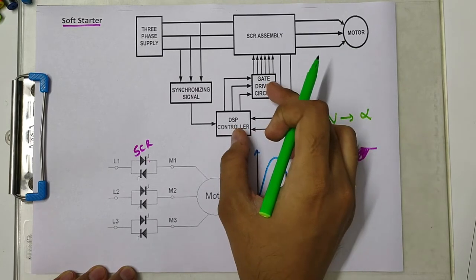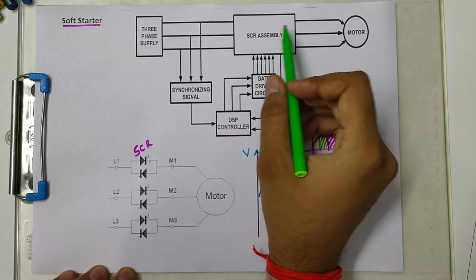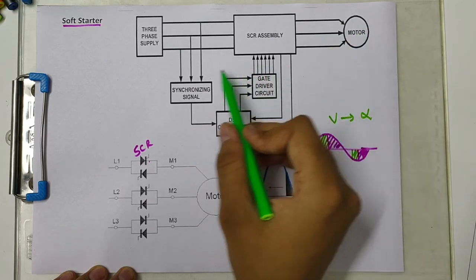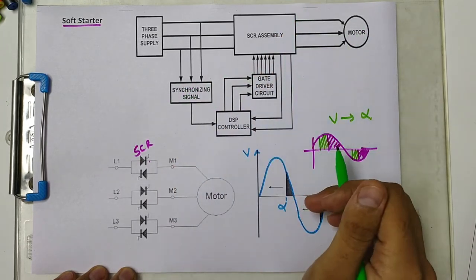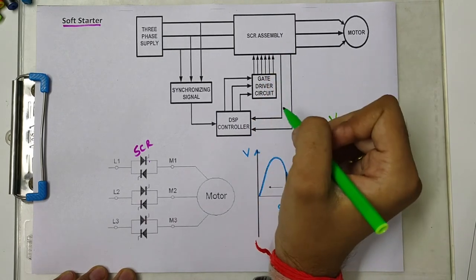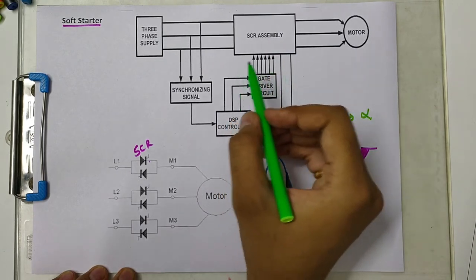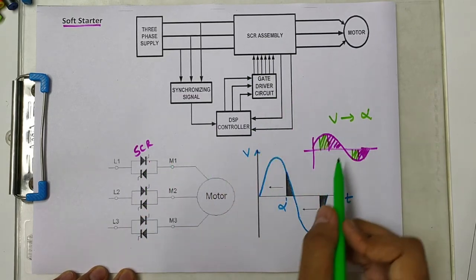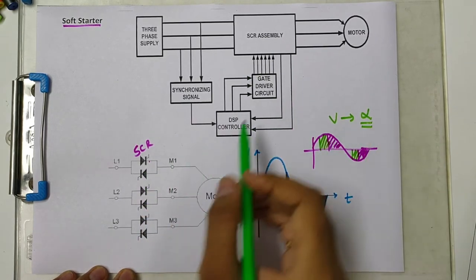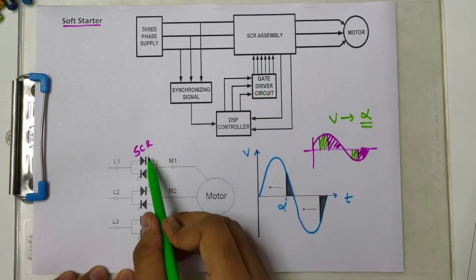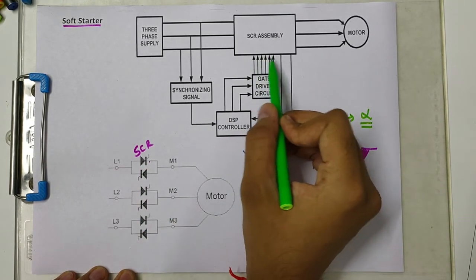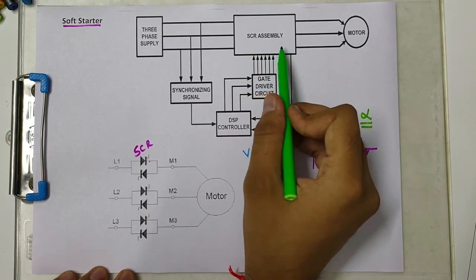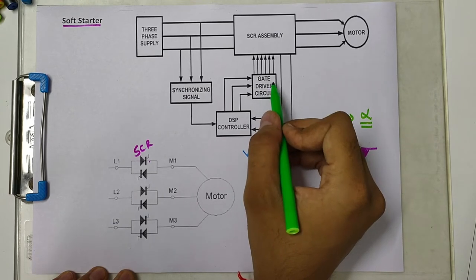To control these thyristors, we need the gate driver circuit which controls the firing angle alpha. This is the gate driver circuit for all six thyristors - one, two, three, four, five, six - so six terminals for six gate signals going to this power circuit.